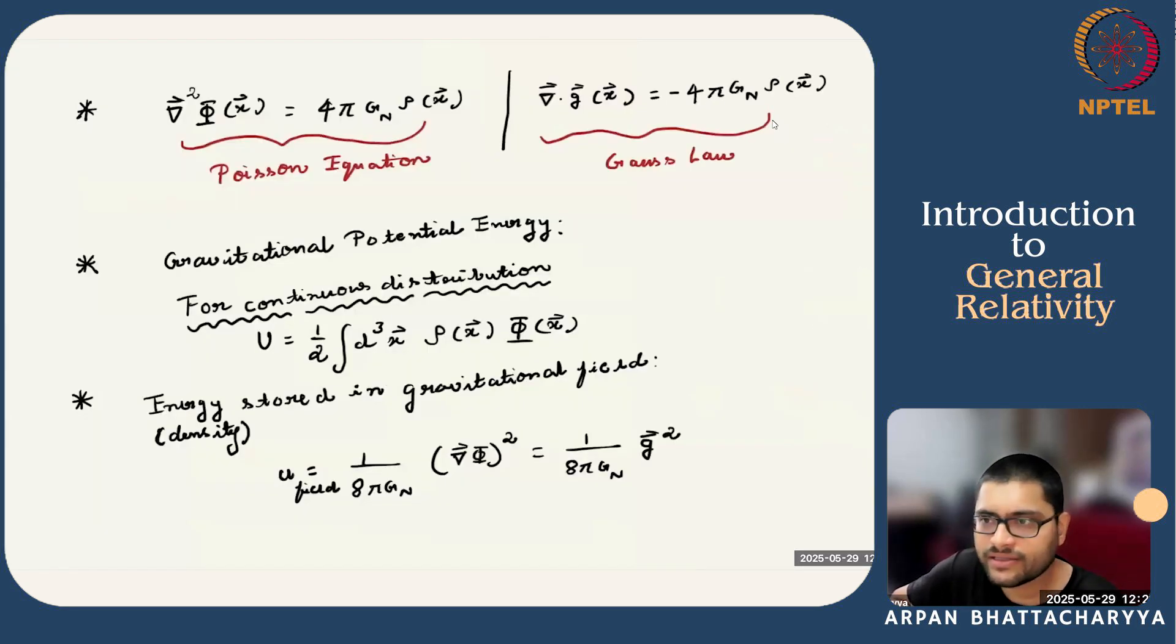From this, we can easily derive that del dot g is minus 4πG Newton times rho. Rho is the density of the gravitational mass of the extended distribution. This is nothing but Gauss's law. Also, we end up with the Poisson equation for the scalar potential: the Laplacian of phi is 4πG Newton times rho. We also discussed various important properties like existence and uniqueness of the solution of this Poisson equation, Earnshaw's theorem, etc., in the previous lecture.